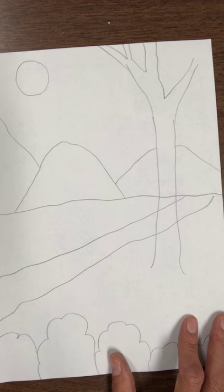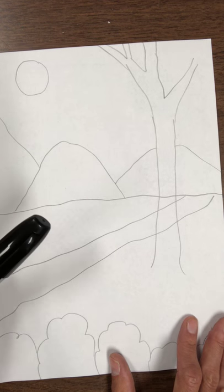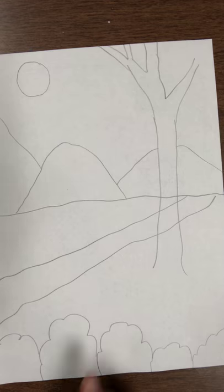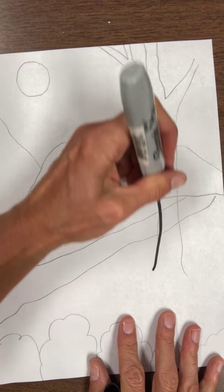Once you're done with the pencil then you're going to move on to Sharpie and you're going to outline your lines.